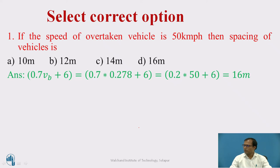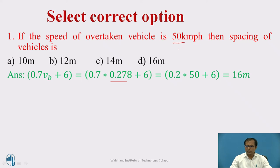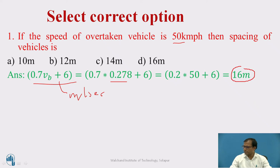In this example, the speed of the overtaken vehicle VB is given as 50 KMPH. Calculating spacing S using S equals 0.7·VB plus 6: since the equation requires meters per second, multiply 0.7 by 0.278 to convert. Substituting 50 KMPH: S equals 0.7 multiplied by (50 × 0.278) plus 6, giving a correct answer of 16 meters.